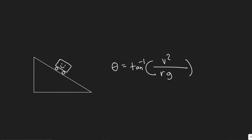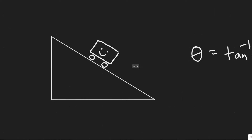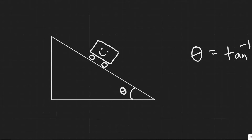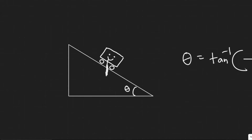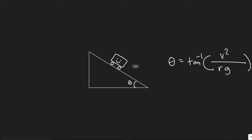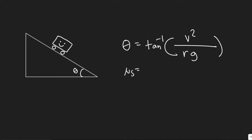In this problem we're told: if a curve with radius 85 meters is properly banked for a car traveling 65 kilometers per hour, what must be the coefficient of static friction for a car not to skid when traveling 95 kilometers per hour? So we have our car on a banked angle, and the car is basically traveling in a circle towards us through the screen. What we're trying to find is the coefficient of static friction so the car doesn't skid when its velocity is 95 kilometers per hour.